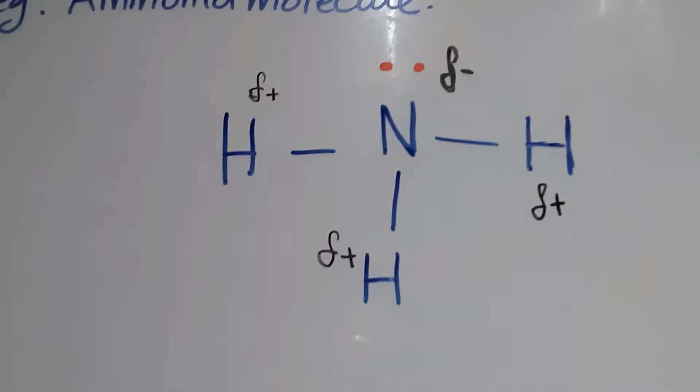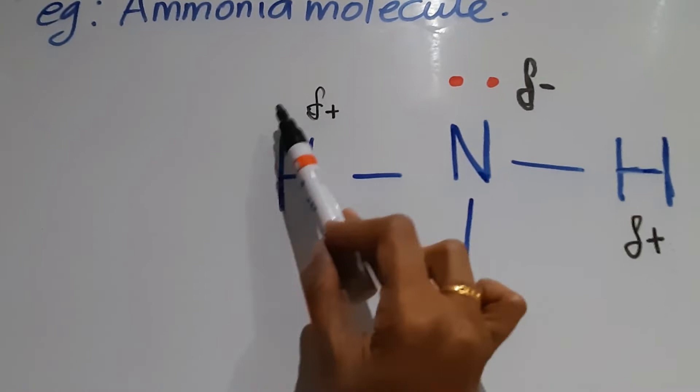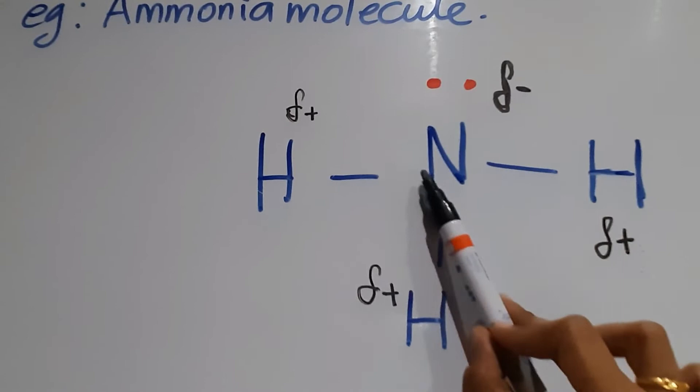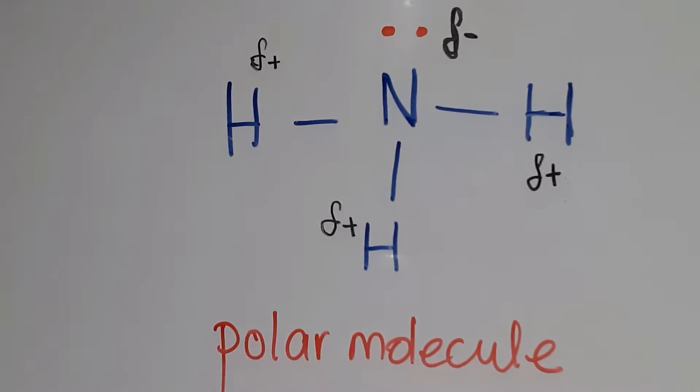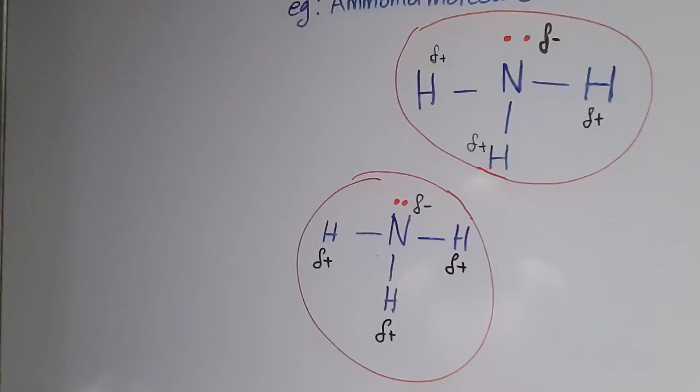When they share electrons, the electrons are pulled more closely towards the nitrogen atom, which causes the hydrogen atoms to be partially positively charged, whereas the nitrogen atom in the ammonia molecule becomes partially negatively charged. This is called a polar molecule, because of the different charges due to electronegativity.